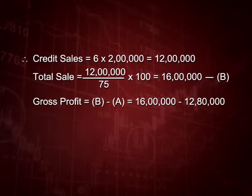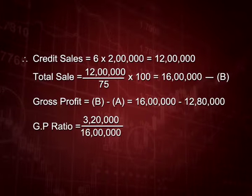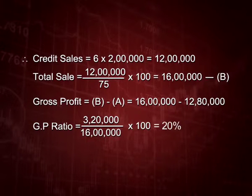Gross profit equals total sales minus cost of goods sold, that is B minus A: 16 lakh minus 12 lakh 80 thousand equals 3 lakh 20 thousand. GP ratio is 3 lakh 20 thousand divided by 16 lakh, multiplied by 100, giving 20 percent as the final answer.